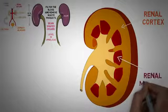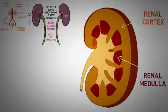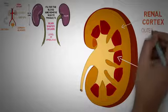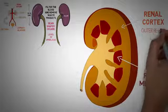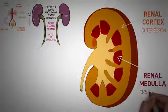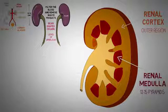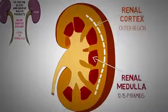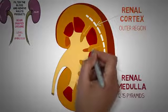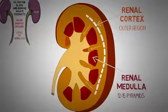If we slice the kidney, we can see the internal structure is divided into two major regions: the renal cortex and the renal medulla. The renal cortex is the outer region of the kidney, while the renal medulla consists of 12–15 cone-shaped structures known as the medullary pyramids. The outer renal cortex runs in a continuous manner with a number of projections that extend down between the pyramids.